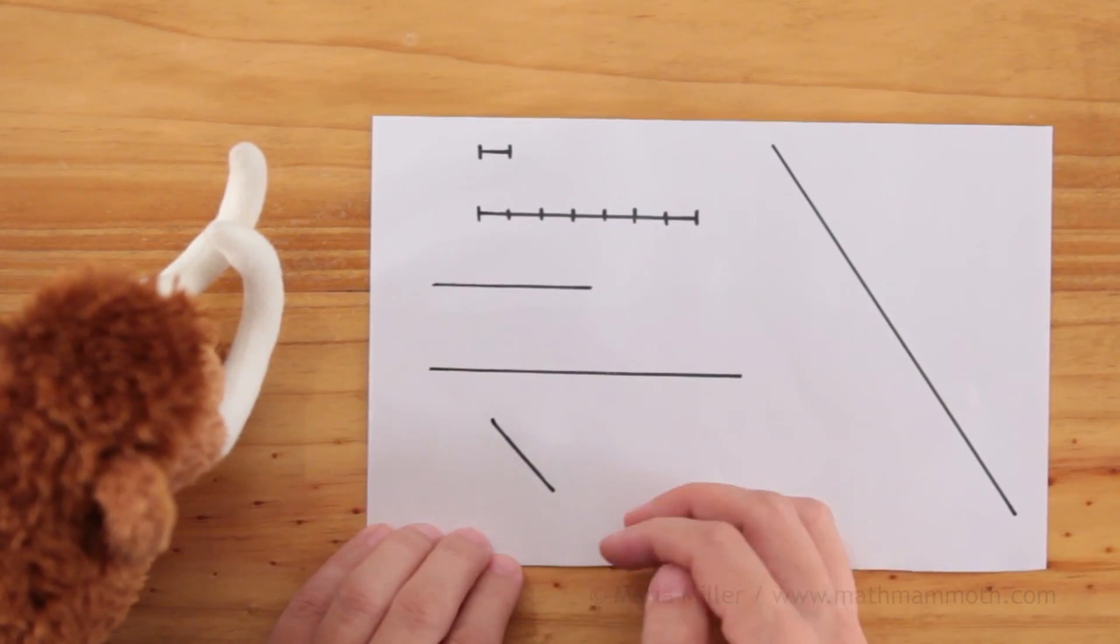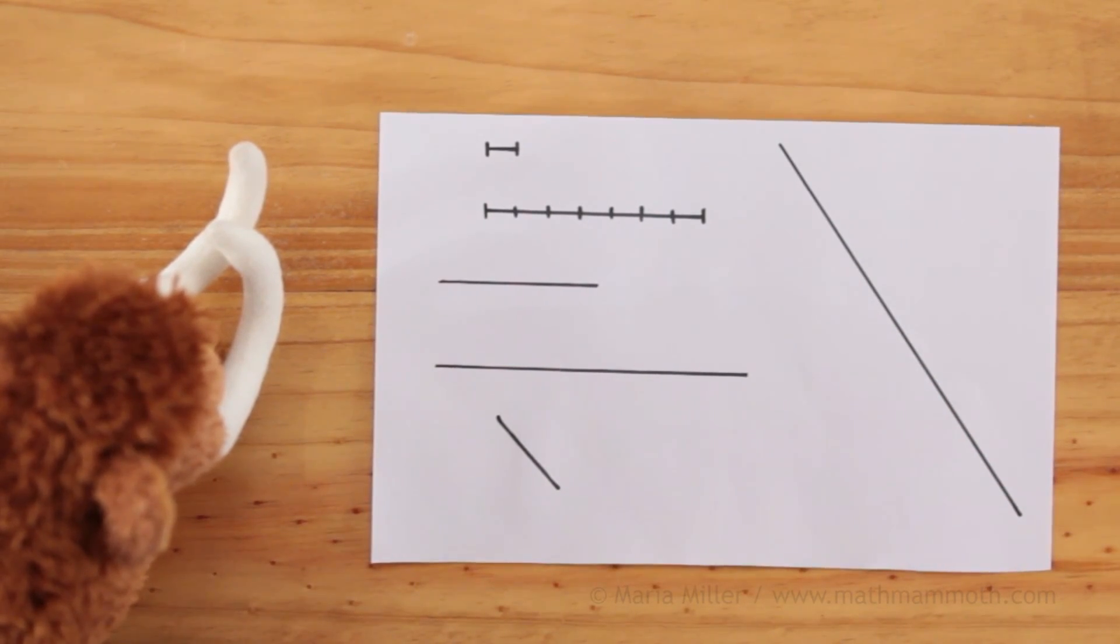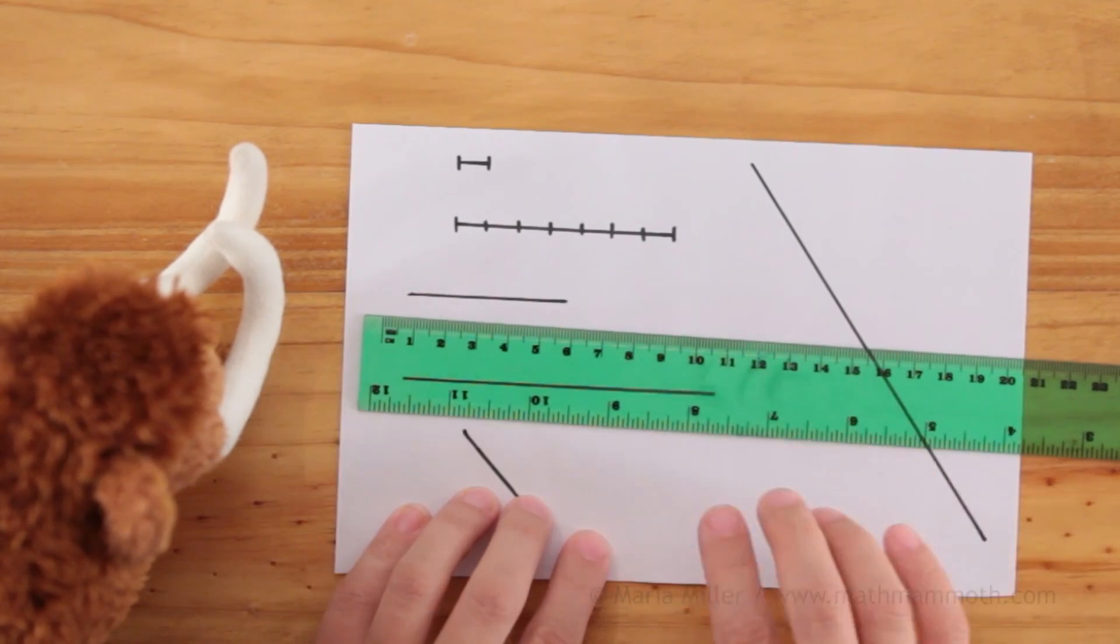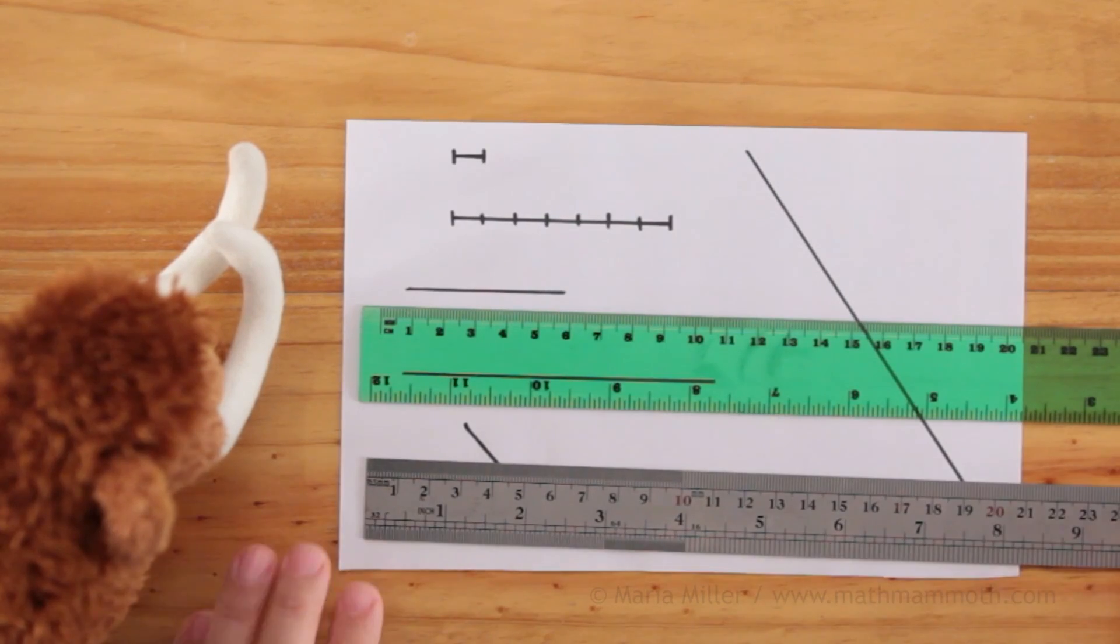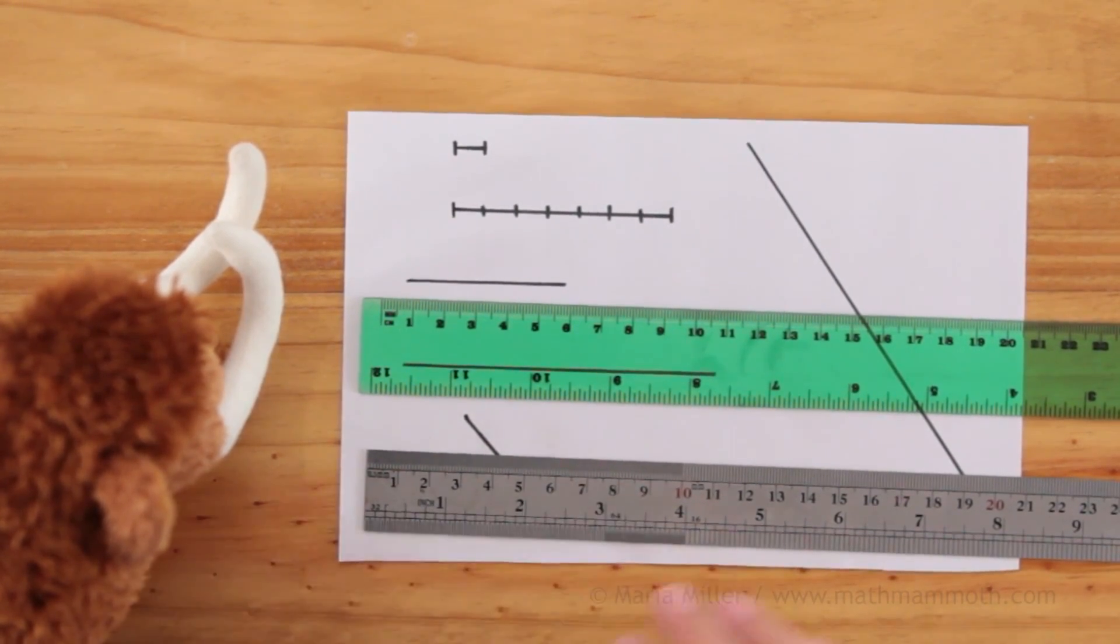And now I'm going to show you how to measure these lines using a ruler in centimeters. I have two rulers here. This one, which is a typical student ruler. And this one, which is a metal ruler. Let me first show you how to use this gray metal ruler.